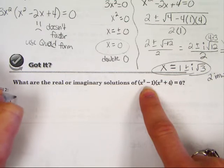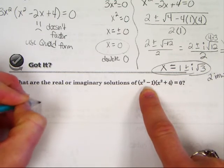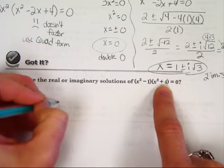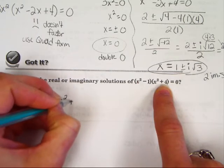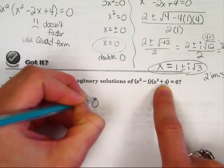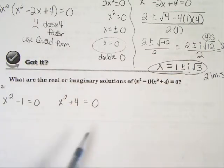So I'm going to take my first binomial and set it equal to 0. I'm going to take my second binomial. What's a binomial? Something that has two terms. And set it equal to 0.